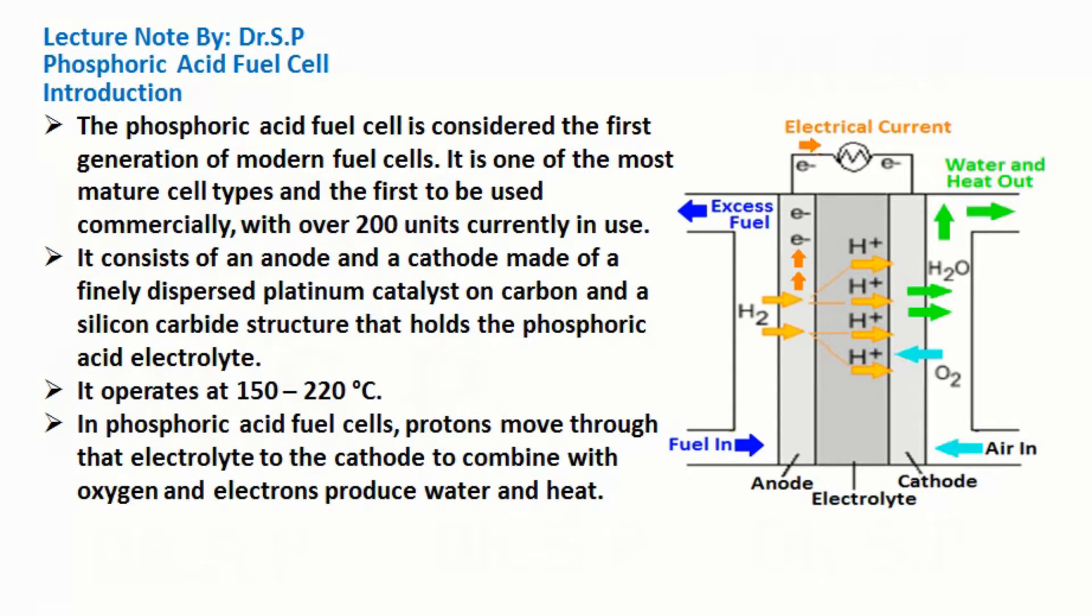In phosphoric acid fuel cells, protons move through that electrolyte to the cathode to combine with oxygen, and electrons produce water and heat.